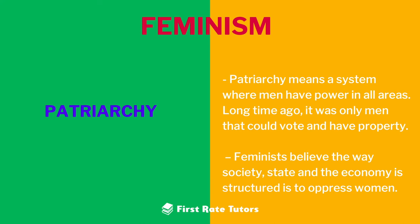Another key aspect of feminism relates to patriarchy — a system where men hold power in all areas of society. Long ago, it was only men who could vote and own property. In Victorian England, for instance, women were actually classified as the property of men — first of their fathers, and then of their husbands upon marriage. This is a patriarchal structure that took power away from women.